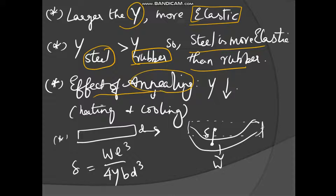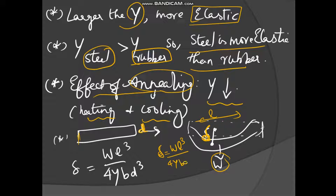Regarding the effect of annealing: annealing is heating and cooling gradually. If you anneal a material, its Young's modulus decreases. For a bridge of thickness D, due to its own weight it shows a bending given by the formula: bending δ = WL³ / (4YBD³), where L is the length of the bridge. So bending is proportional to L³, inversely proportional to Young's modulus Y, and inversely proportional to D³.